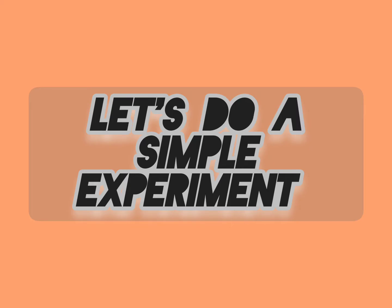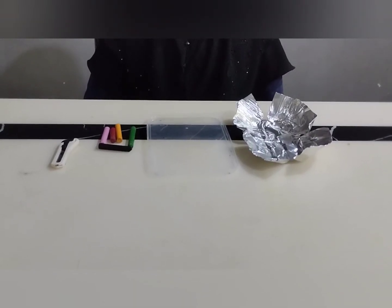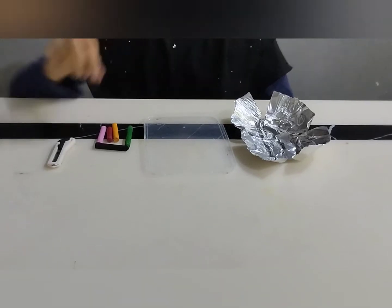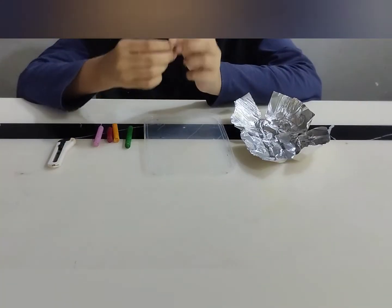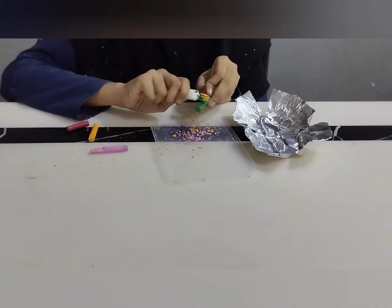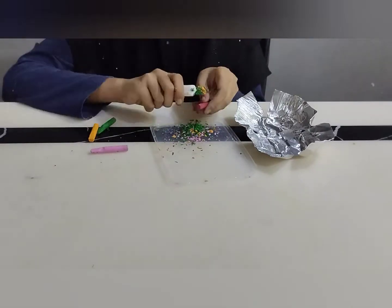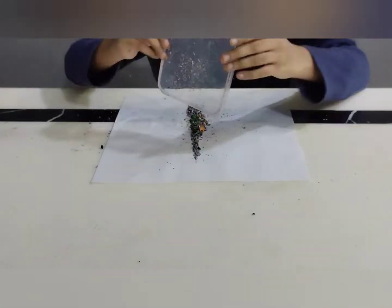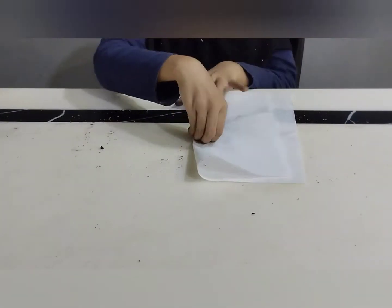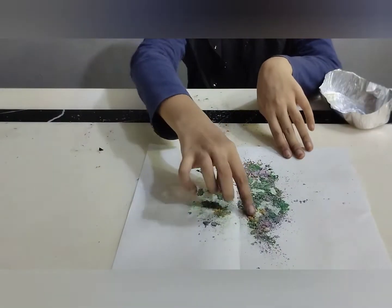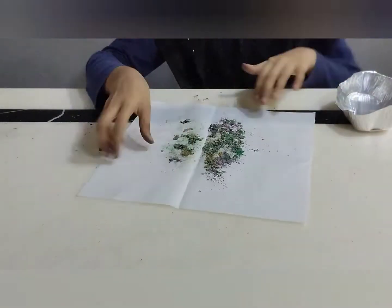Now let's do a simple experiment to demonstrate how the rock cycle works. We need crayons, a scissor, an aluminum foil or parchment paper, and a plate. Let's say these crayons are igneous rock. Then there's weathering and erosion — we have sediments now. Now there's erosion happening and the sediments are compressed to form sedimentary rock.